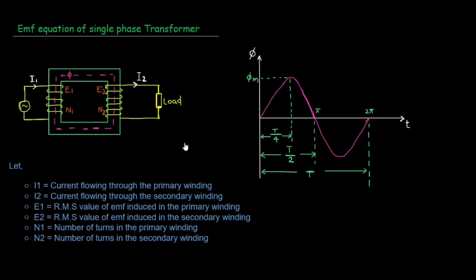We will learn the EMF equation and the basic equation. We will look at the primary winding and the secondary winding. On the left is the primary winding. For the primary winding, we call it N1.